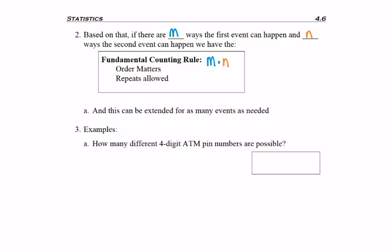Anytime you're asked 'how many,' I'm going to get some sort of whole number answer. I want to go back to does order matter and are repeats allowed, because if that's the case I can use this fundamental counting rule. So first I ask myself, does order matter?